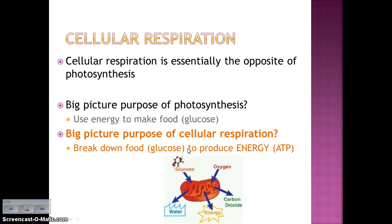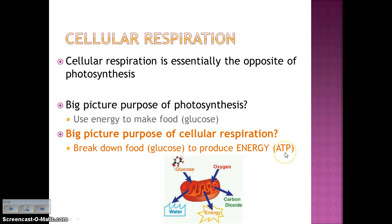Now we're going to move on to cellular respiration, which is essentially the opposite of photosynthesis. Everything being produced in photosynthesis is taken in during cellular respiration, and what cellular respiration produces is taken in by photosynthesis. The big picture purpose of photosynthesis was to use energy to make food — glucose. So cellular respiration, being the opposite process, takes food — glucose — and breaks it down in order to produce energy in the form of ATP.